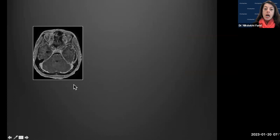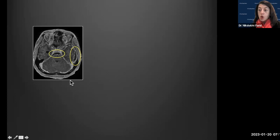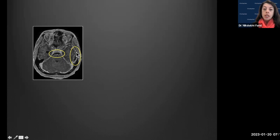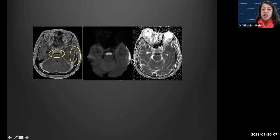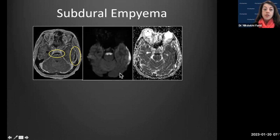Next, on axial T1 post-contrast, we see crescentic-shaped collections along the temporal convexity and anterotemporal convexity, as well as along the prepontine cistern. On DWI and ADC these collections show restricted diffusion — this is pus — making this a case of subdural empyema.